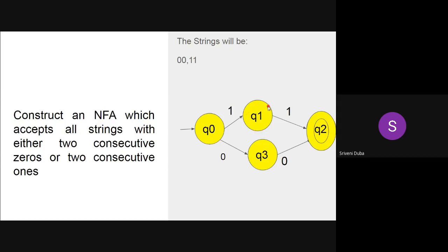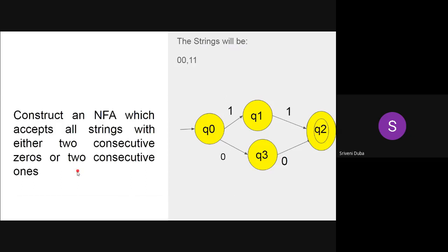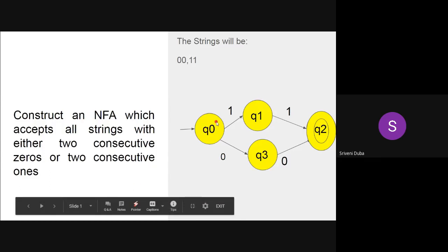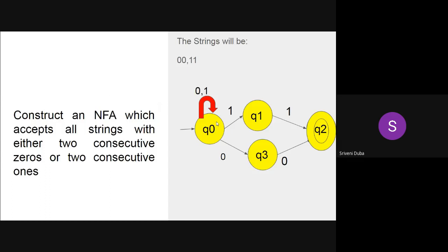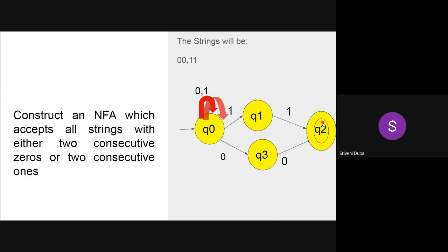Moreover this is like a DFA, and the prefix and suffix could be anything. There is no constraint that only 00 or 11 should be accepted, but all strings with either two consecutive zeros or two consecutive ones. So what extra thing we can do is at q0 we can add a self loop with input labels 0 and 1. A self loop always indicates zero or more occurrences. And similarly at q2 also there can be any suffix, so at q2 also we are taking a self loop with input labels 0, 1.